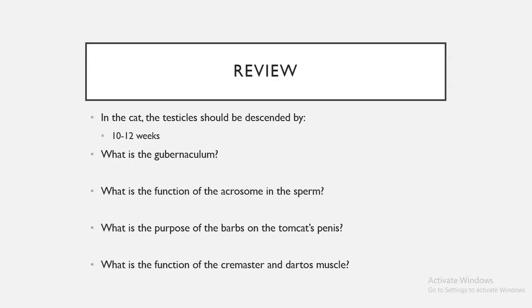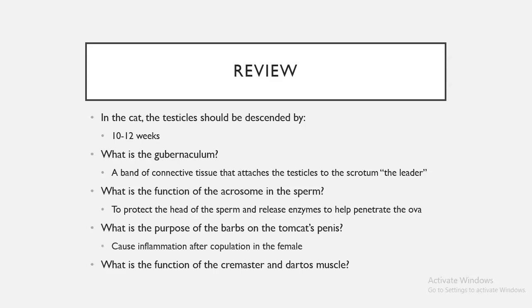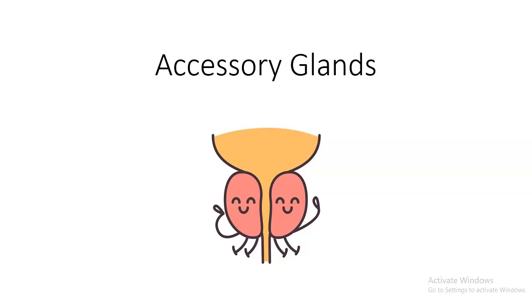Review: In cats, testicles should be descended by 10–12 weeks. The gubernaculum is a band of connective tissue attaching the testicles to the scrotum — the 'scout leader.' The function of the acrosome is to protect the sperm head and release enzymes to penetrate the ova. The barbs on the tomcat penis cause inflammation after copulation in the female. The cremaster and dartos muscles move the testes closer to or further from the body to aid in thermoregulation.